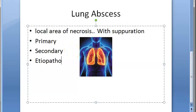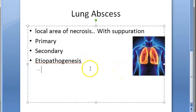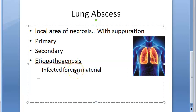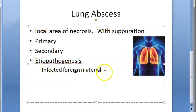The etiopathogenesis of lung abscess involves three main etiologies. The first is aspiration of infected foreign material — some foreign material carrying bacteria or infection gets aspirated into the lung. It could be organic matter, food, or gastric contents that get aspirated into the lung, causing a lung abscess.